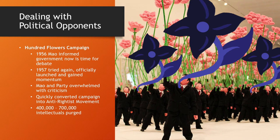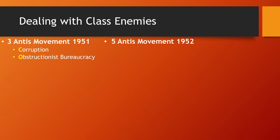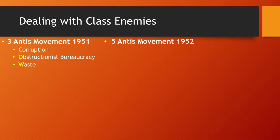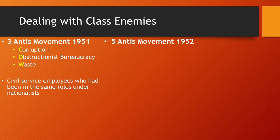The Three Antis Movement targeted corruption, obstructionist bureaucracy, and waste — remember this with the acronym COW. Anyone who worked for the previous Nationalist regime was now deemed a class enemy and was subsequently purged.